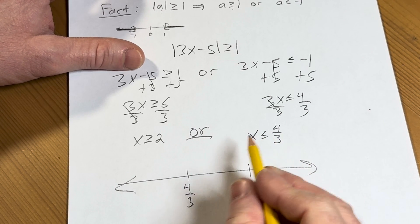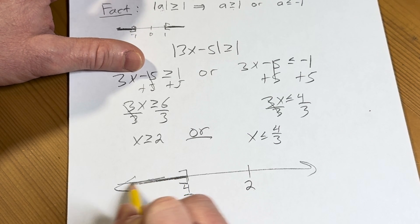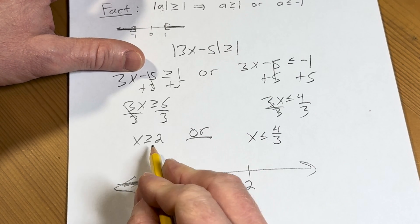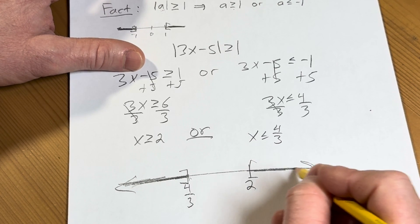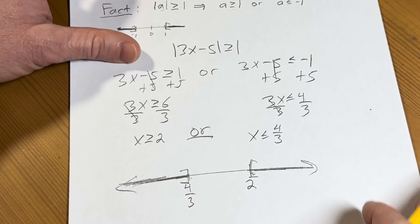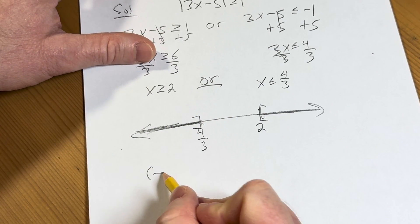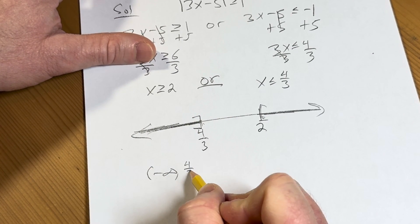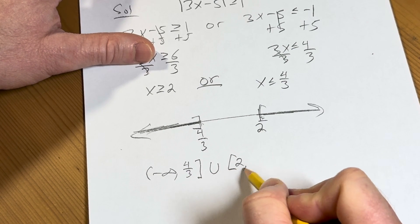So we know that x is less than or equal to 4 thirds. So we're including that 4 thirds. So we're going to use a bracket. And x is greater than or equal to 2. So we're going to include that 2. So we're going to use a bracket. So now from here, we can get the answer. It'll be negative infinity to 4 thirds, bracket union, and then bracket 2 to infinity.